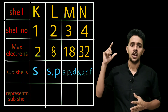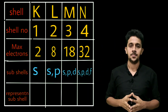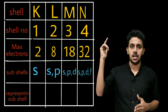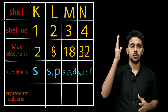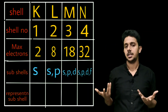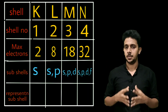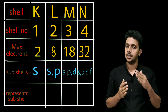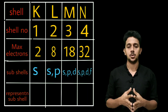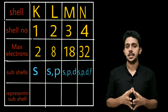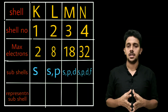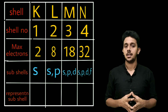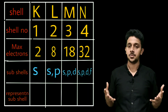You can see in the table above. The shell numbers are 1, 2, 3, 4. The maximum number of electrons are: 2, 8, 18, and 32. The 1st shell has 1 sub-shell; the 2nd shell has 2 sub-shells — S and P; the 3rd shell has 3 sub-shells; the 4th shell has 4 sub-shells — S, P, D, F.